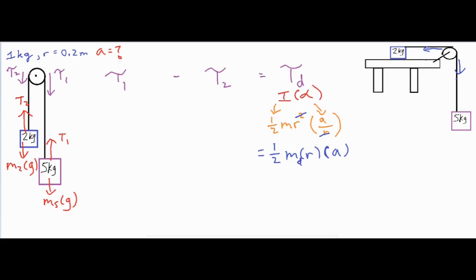For the torque expressions: torque one is provided by tension T1 times r, the lever arm which is the radius of the pulley. Similarly, torque two is provided by tension T2 times r, again the radius of the pulley. However, we still have too many unknown variables, so we need to do further substitutions.